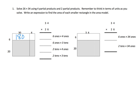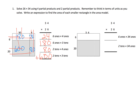Starting with the four partial products: this area is 180, this area is 24 square units, this is 600 square units, and this is 80 square units. Six times four goes here, six times three tens goes here giving 180, then two tens times four ones is 80, and two tens times three tens equals 600. Then we add those partial products.